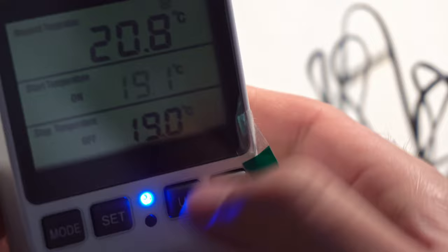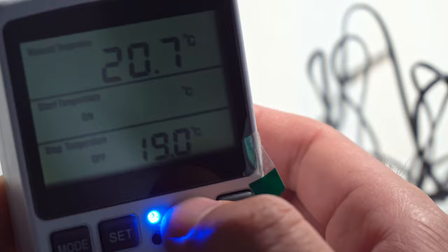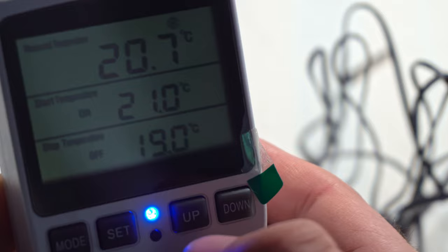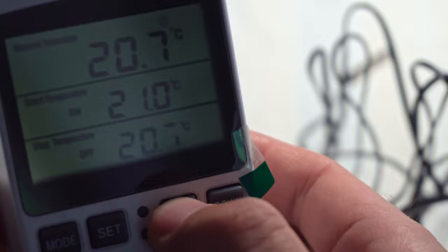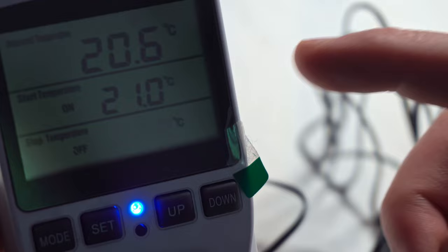Once again, press set, it has to flash and then it's adjustable. Put the on temperature to let's say 20. You can hold it down also. 21 degrees. Go to the next one using the set button and turn off the lamp at a higher temperature. And it turned off. 21 degrees and 22. You don't have to press anything. It will accept it. So it turns on at 21 degrees and turns off at 22 degrees.